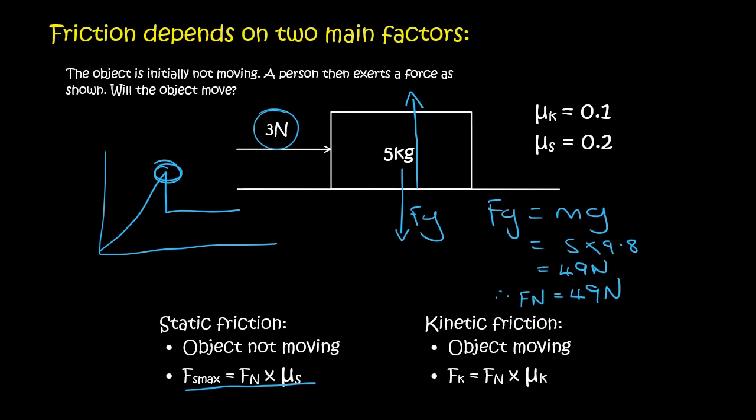Remember, this is gravity, and this is your normal force. So then we can work out the FS max by saying 49 multiplied by the static coefficient, which is 0.2. And that's going to give us 9.8 Newtons. That means that the maximum friction force for this object, when it's not moving, is 9.8. So if you come along with your 3 Newton force, that object is not going to move.